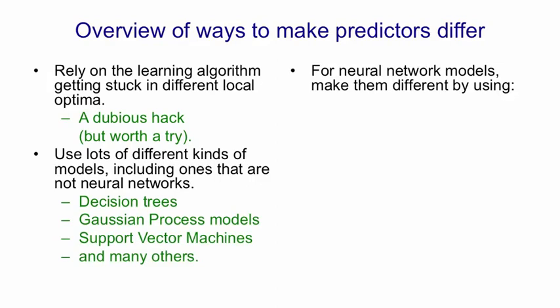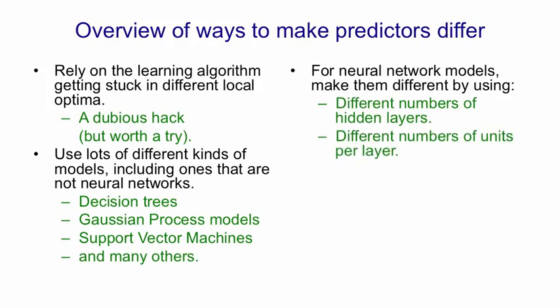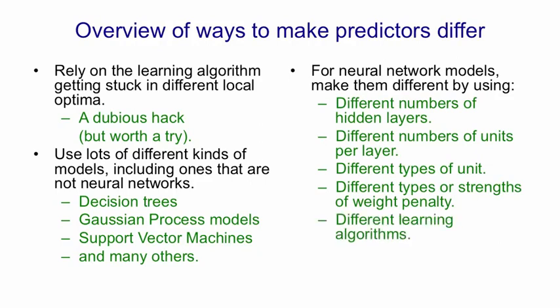If you really want to use a bunch of different neural network models, you can make them different by using a different number of hidden layers or a different number of units per layer or different types of unit. Like in some nets you could use rectified linear units and in other nets you could use logistic units. You could use different types or strengths of weight penalty. So you might use early stopping for some nets and an L2 weight penalty for others and an L1 weight penalty for others. You could use different learning algorithms. For example, you could use full batch for some and mini batch for others if your data set is small enough to allow that.